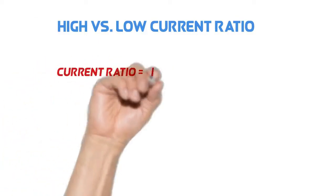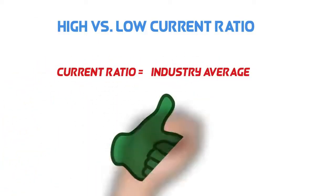So if the current ratio is equal to the industry average ratio, then it will be considered beneficial for a business.